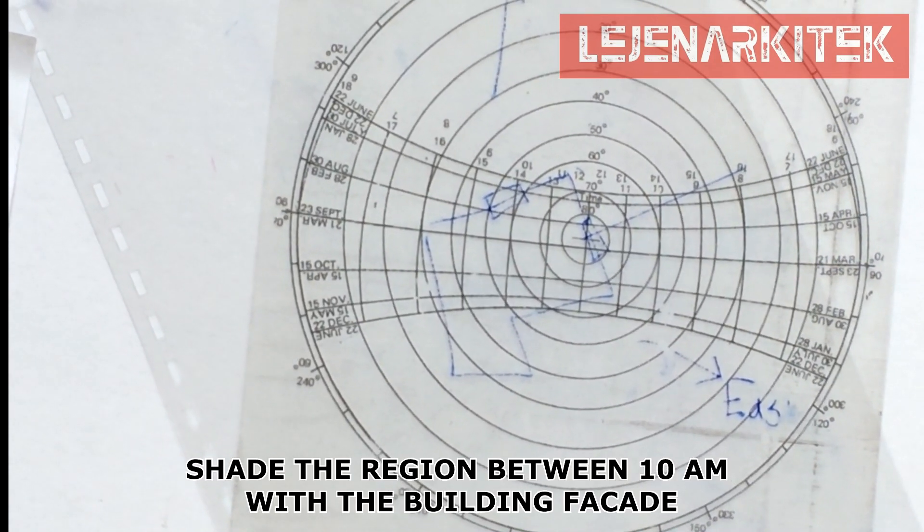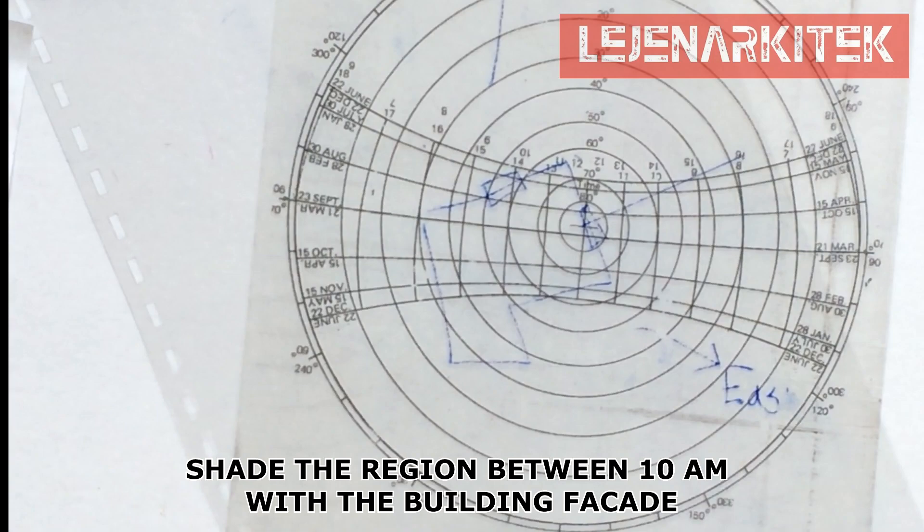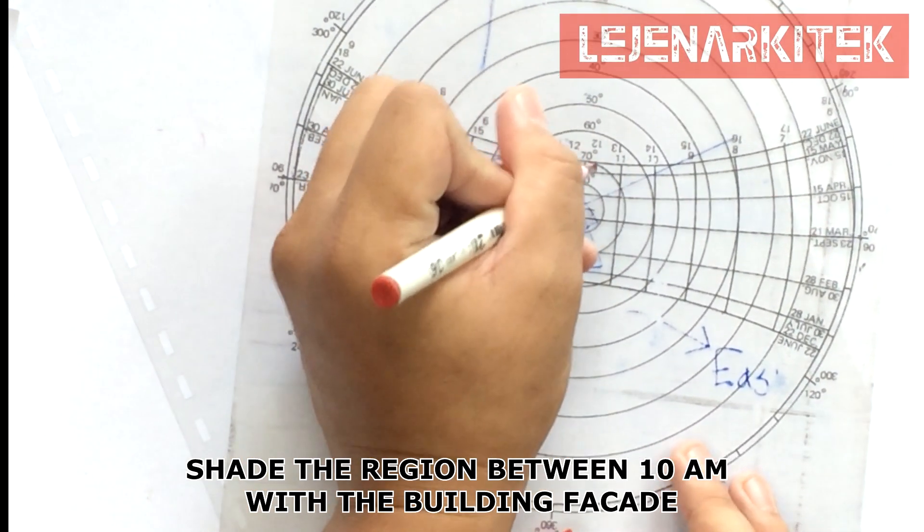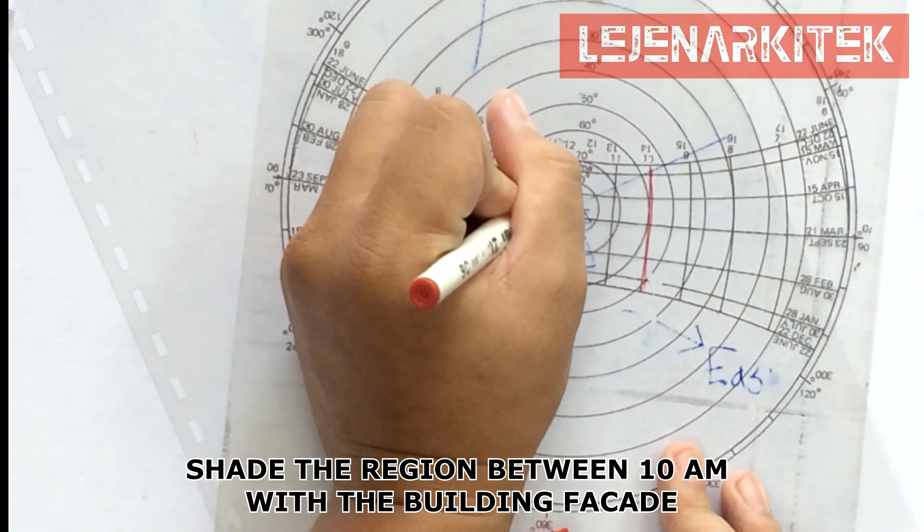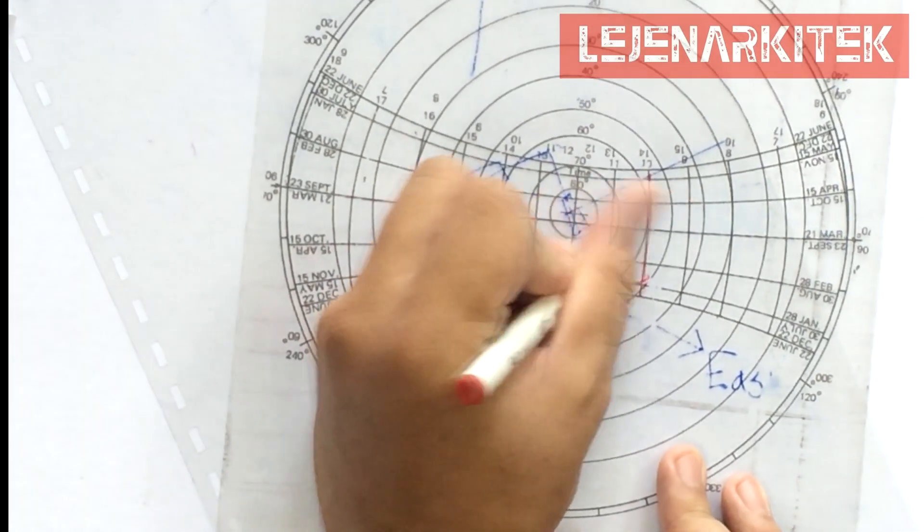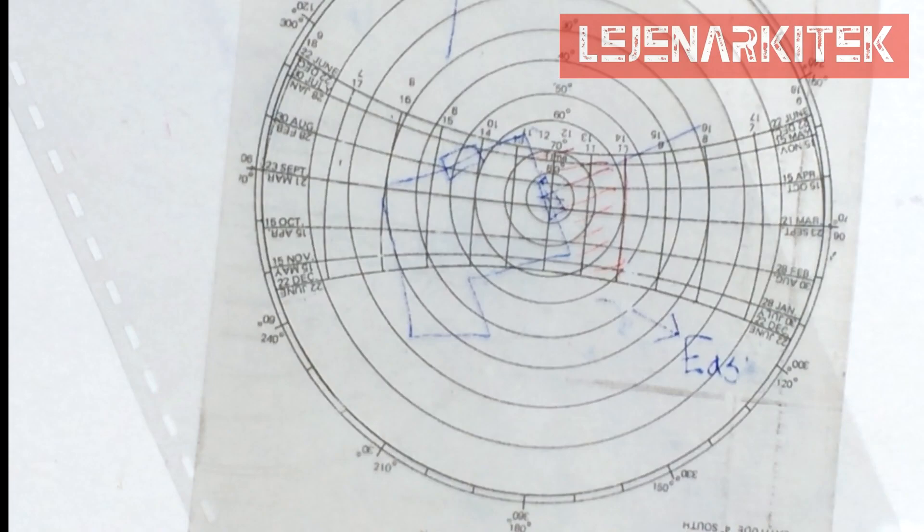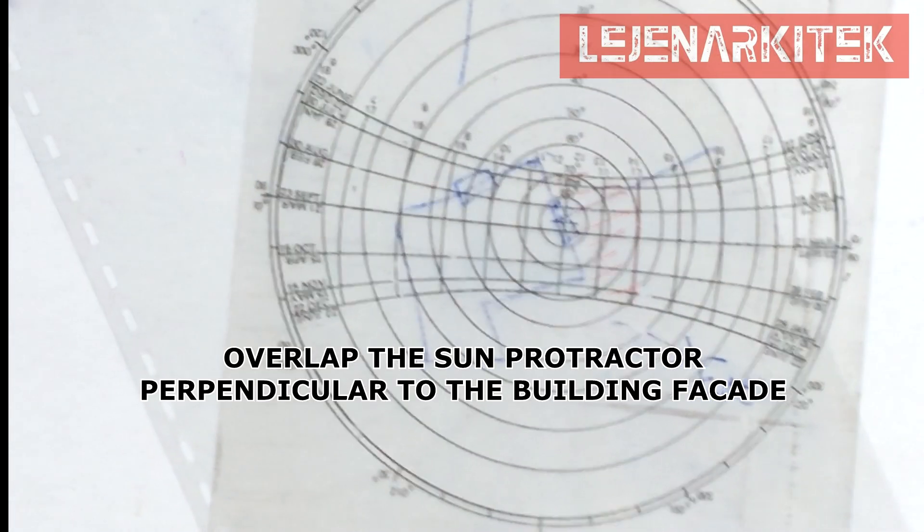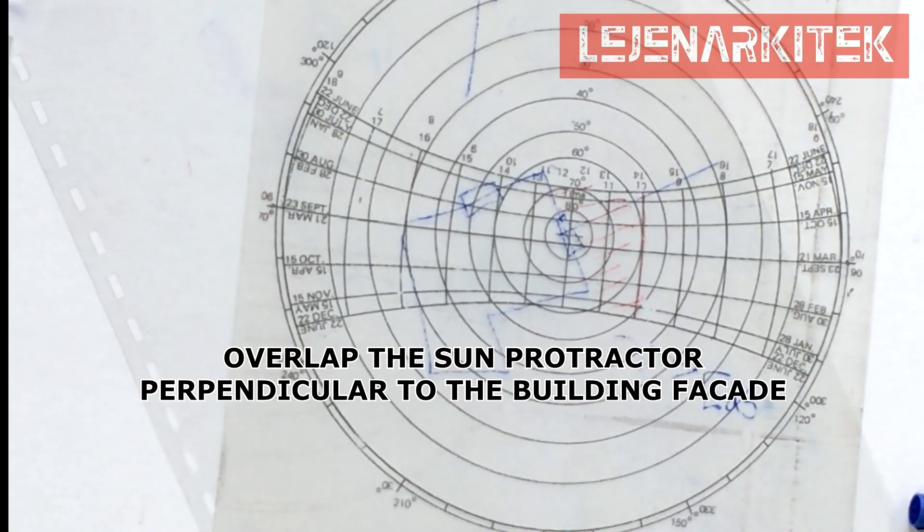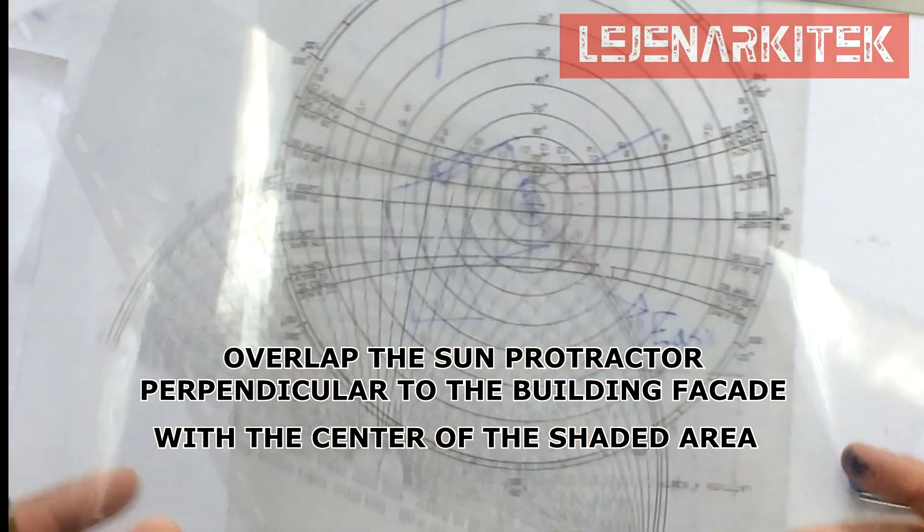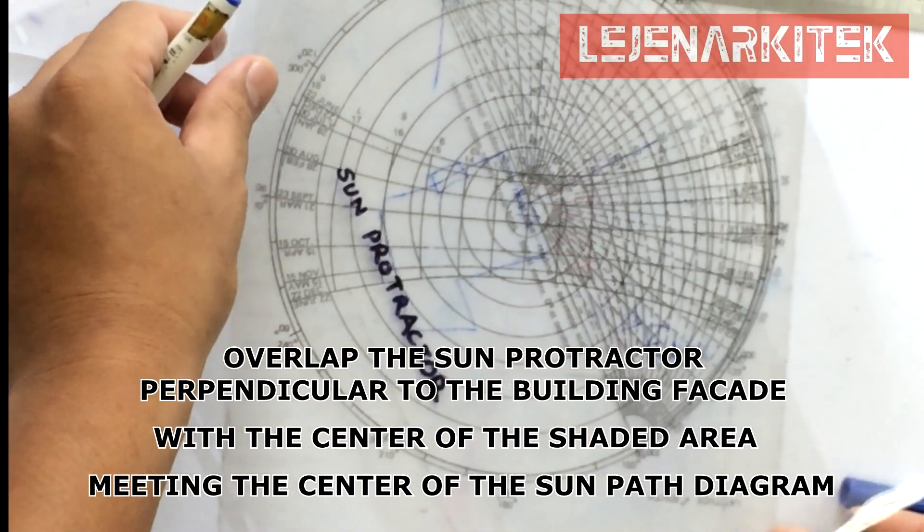Step six, shape the region between 10am timeline with the building facade. Step seven, overlap the sun protractor perpendicularly to the building facade with the center of the shaded area meeting the center of the sun path diagram.